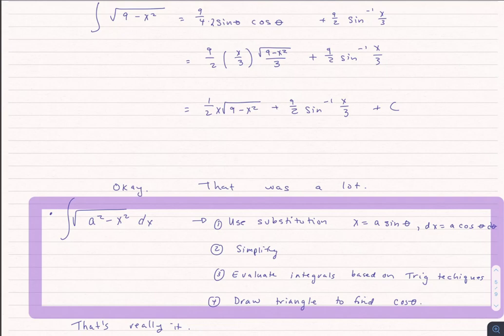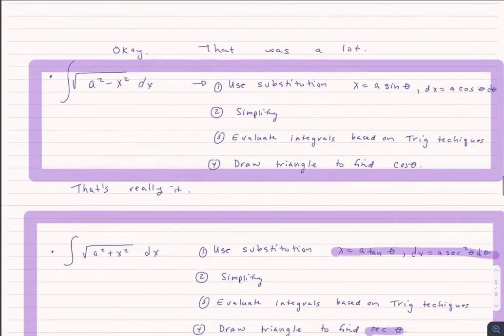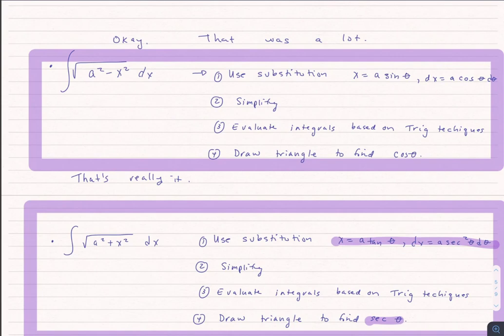Now let's look at a different type of trig substitution: when we have the square root of a squared plus x squared dx. This time the substitution, instead of a sine theta, is going to be x equals a tangent theta. And dx, instead of being a cosine theta d theta, will be a secant squared theta d theta. We'll again simplify, evaluate integrals using trig techniques, and then draw a triangle — this time to find not cosine of theta, but secant of theta.